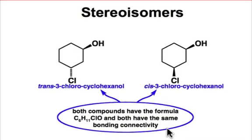The pair of structures shown here are also isomers. They have the same formula C6H11ClO. They have the same bonding connectivity, so they're not constitutional isomers. The question then becomes: how do they differ? And do they differ at all?